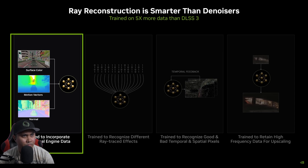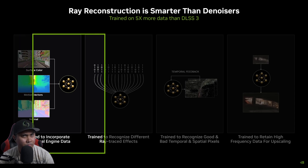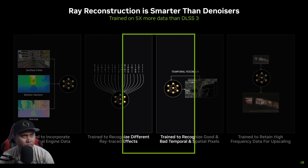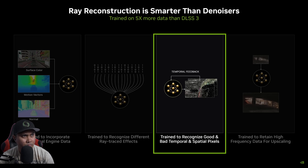DLSS 3.5 is trained on five times more data than previous versions. This was necessary because of the diversity of ray tracing effects that the model needs to recognize and work with. We've trained this new DLSS model to recognize many different ray tracing effects, to make smarter decisions about temporal and spatial information reuse.